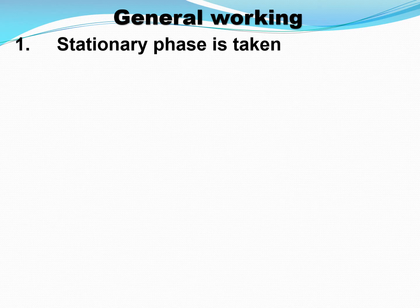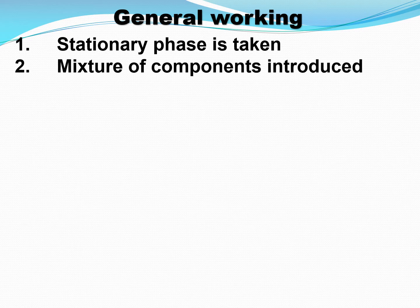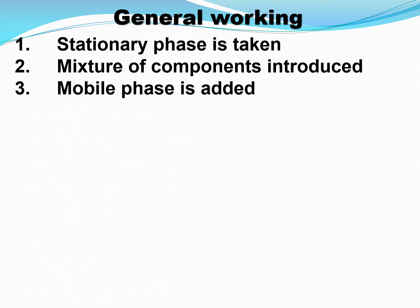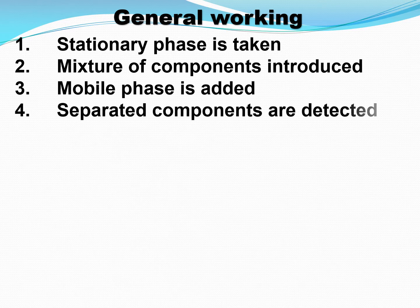Let us look at the general working — how a chromatographic separation works. There are basically four steps. The first step is the stationary phase is taken. How we take the stationary phase differs, giving us different chromatographic techniques. Second step: the mixture of components is introduced. Third step: the mobile phase is added. Fourth step: the separated components are detected. These four steps are common in all chromatographic techniques.